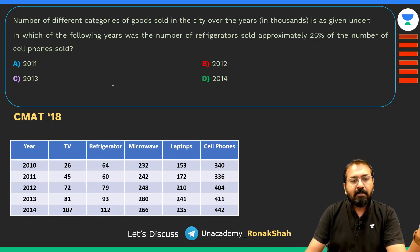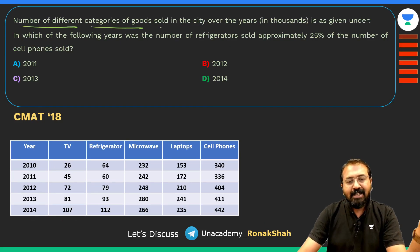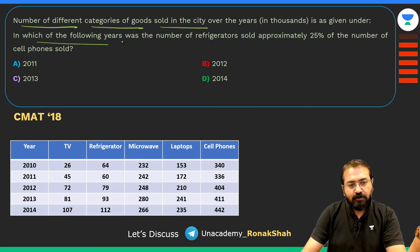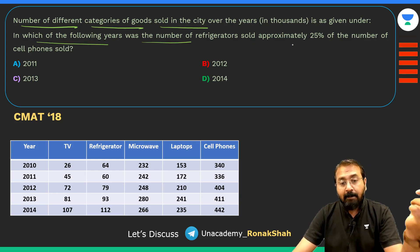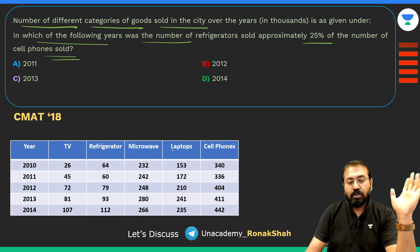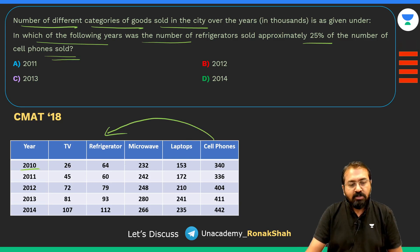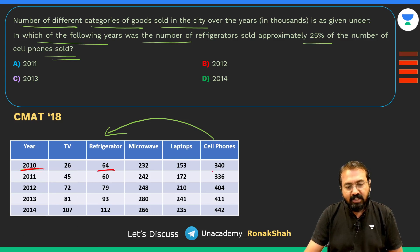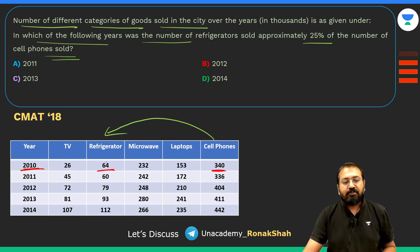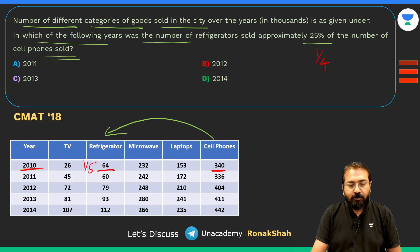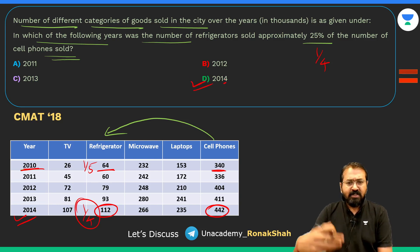Last question: number of different categories of goods sold in a city over the years is given. In which year was the number of refrigerators sold approximately 25% (one-fourth) of cell phones sold? In 2010: refrigerators = 64, cell phones = 340 — that's roughly one-fifth, not one-fourth. In 2014: refrigerators = 112, cell phones = 442 — approximately one-fourth. So the answer is year 2014.